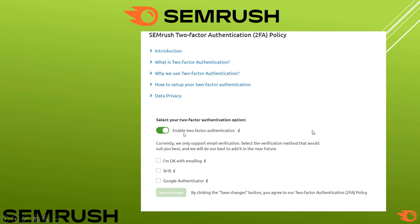You can enable two-factor authentication with three options: email, SMS, and Google Authenticator app. If you use the Google Authenticator app, you install it and a particular code is generated for 60 seconds, after which the code changes. These are the three options provided as an additional security feature for SEMrush user accounts.